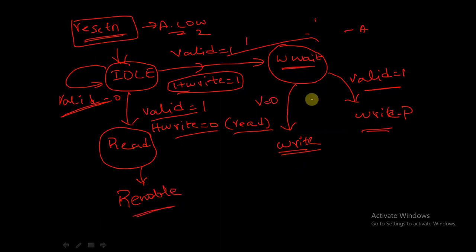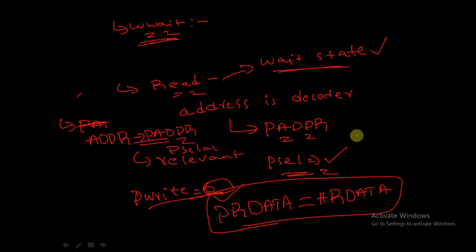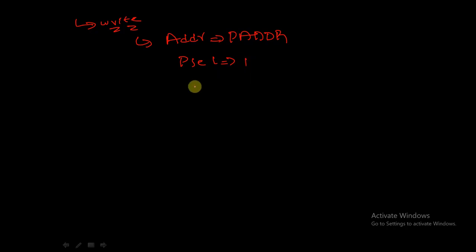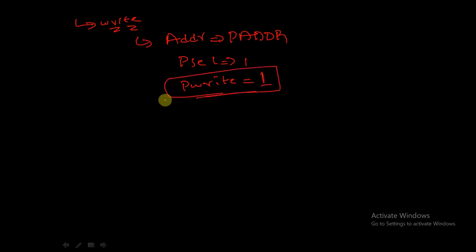Now let's discuss about the write state. During this write state, the address is decoded and it is assigned to P address, the relevant P select signal is driven high, and the P write signal will be driven to 1. So during the write state, the address is decoded and driven to P address, the relevant P select signal line is driven high, and P write is driven high.